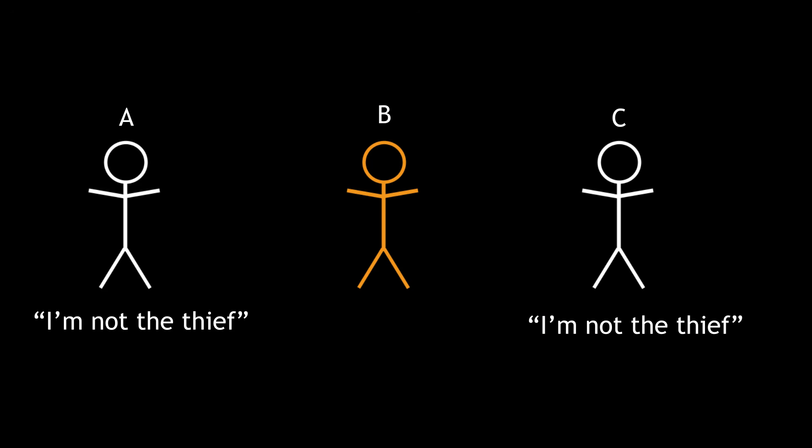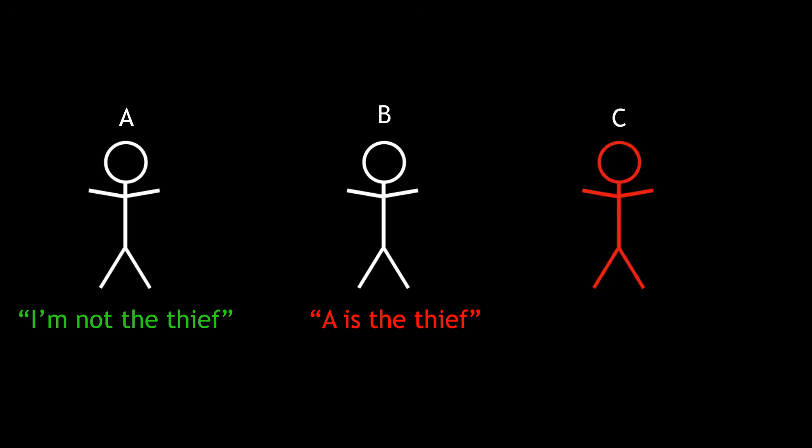If B is the thief, then both A and C are telling the truth. So B can't be the thief either. If C is the thief, then B is lying, but A is telling the truth. This is the only case that is logically consistent with the fact that only one person is telling the truth. So we've deduced that only C can be the thief.